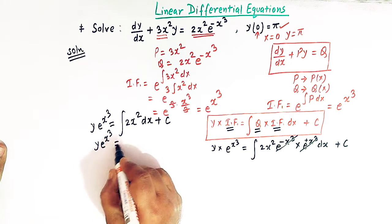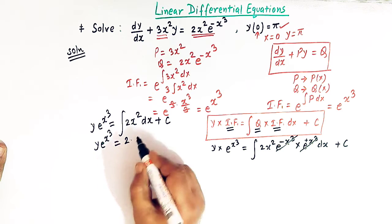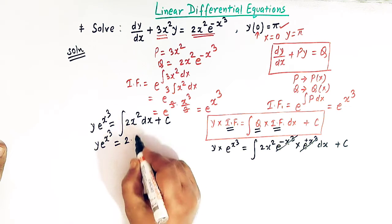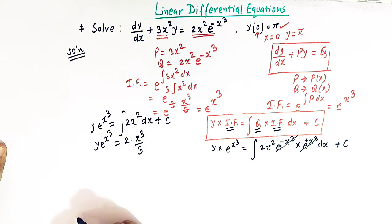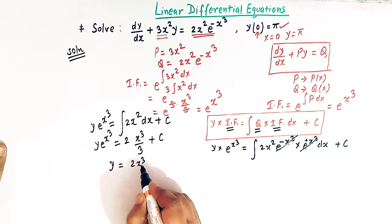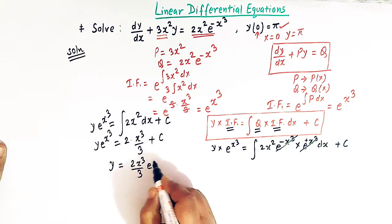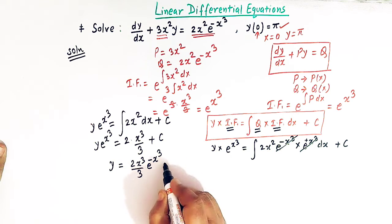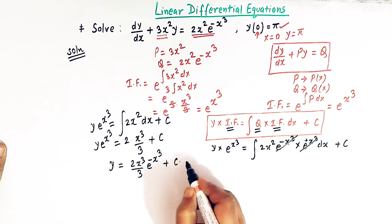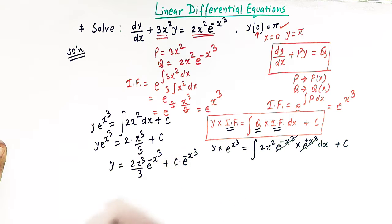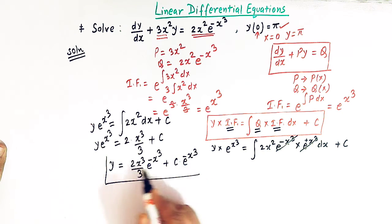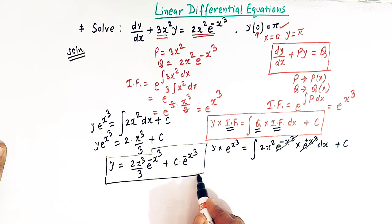We take 2 outside the integral; the integral of x² is x³/3. So we get y · e^(x³) = 2x³/3 + c. Dividing both sides by e^(x³), y = (2x³/3) e^(−x³) + c · e^(−x³). This is the general solution.